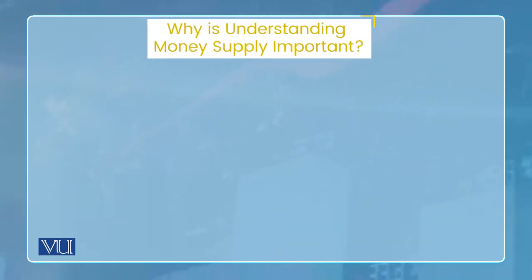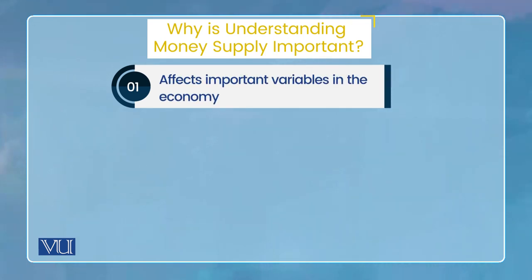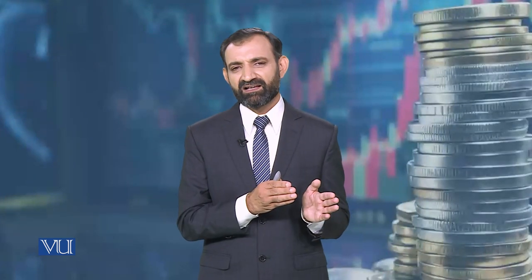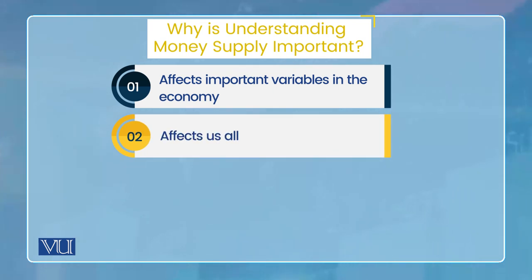Then why is understanding money supply important? Yeh concept kyun samajhne ki zaroorat hai? Agar hum economics ke student hain, toh money supply ke process ko samajhna hamari liye zaroorat ho gaya. Dekhen, pehli baat toh yaad rakhein — aap economics ke student na bhi hon, ek baat clear — ki money economy ke important variables ko effect karta hai. In fact, when you start the course of monetary economics, the subject deals with how money and economic variables are related. Employment is related, income is related, consumption is related, return on assets is related. So money affects all of these variables, which means that money affects all of us.